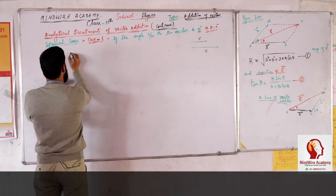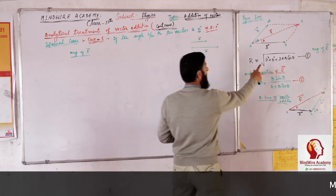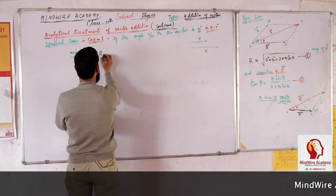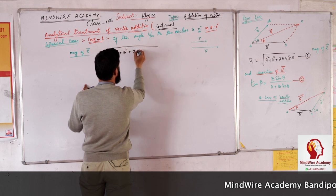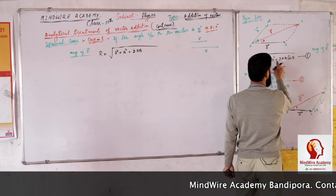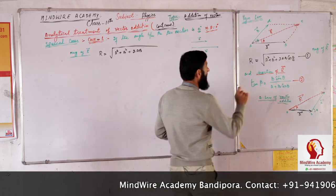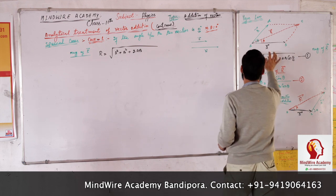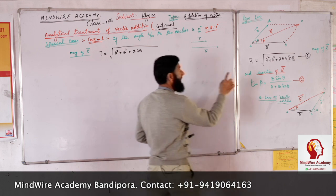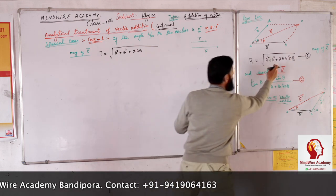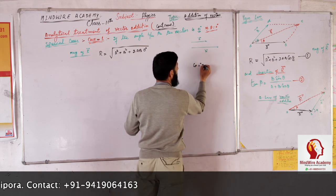First we find the magnitude of the resultant vector. I will use the formula: R equals the square root of A squared plus B squared plus 2AB cos theta. Here A is the magnitude of vector A and B is the magnitude of vector B. In our special case, the angle between the two vectors is 0 degrees, so we substitute theta equals 0 degrees, giving us 2AB cos 0 degrees. Now, cos 0 degrees equals 1.